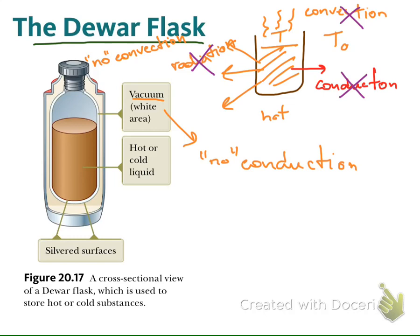Again, keep in mind that this cannot be perfect. There may be some leak in the vacuum because the vacuum in a commercial flask is not perfect. So there may be some small conduction leak. Finally, on the wall of this double-wall glass, they coat the surface with a thin silver layer. This silver surface will reflect radiation — radiation from inside reflects back by the silver wall — so this prevents radiation.